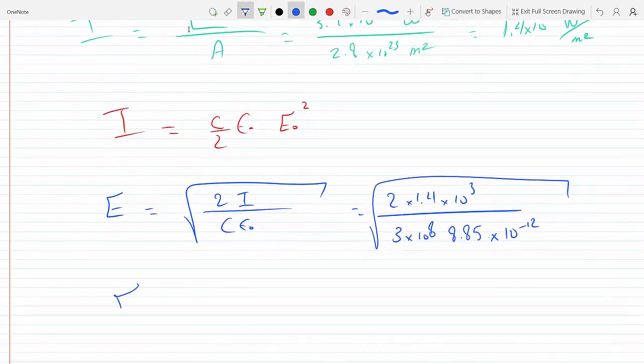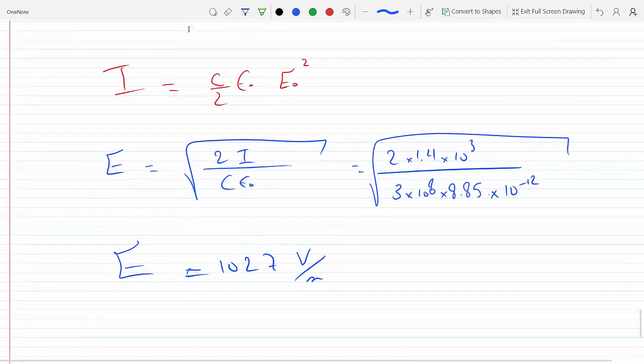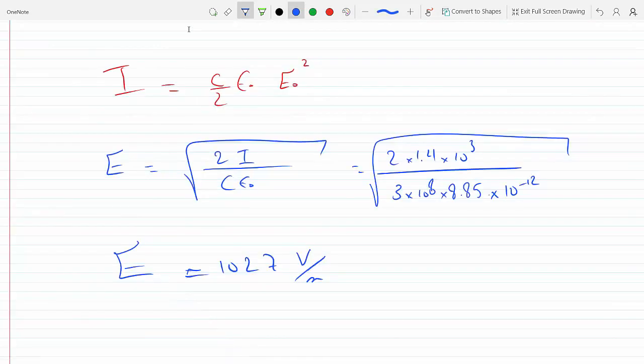And we get E to equal—let's do it on the calculator here—it's about 1,027 volts per meter. This is the magnitude of the electric field.